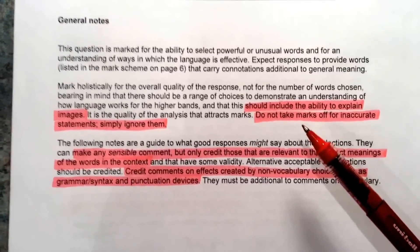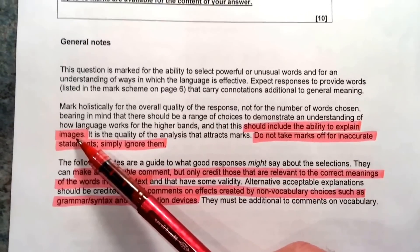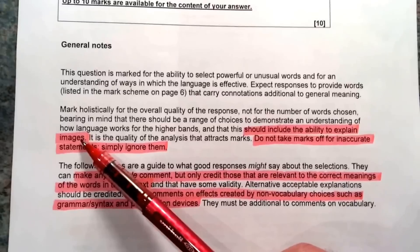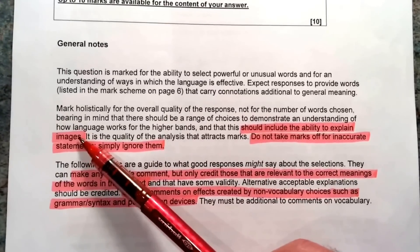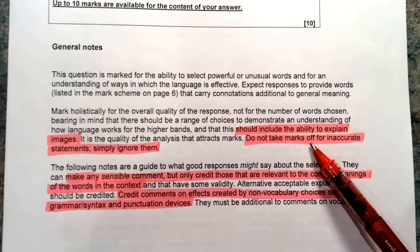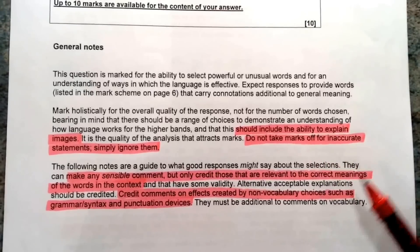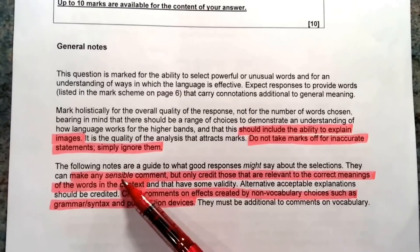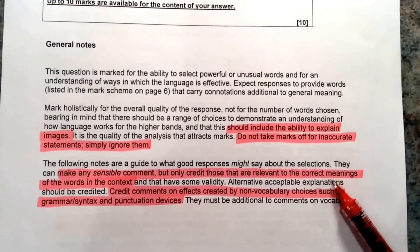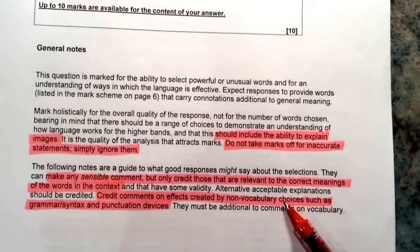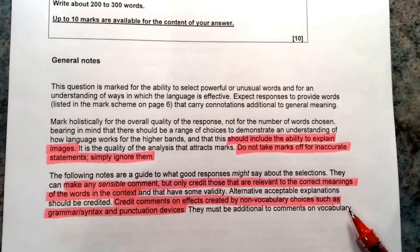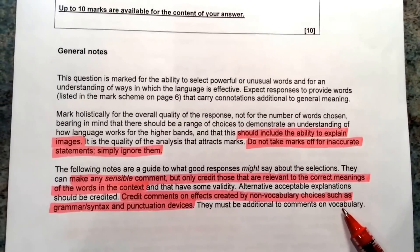The examiners are trying to be really helpful. They want you to be able to talk about images — personification, simile, metaphor, alliteration, or anything to do with sound. But it doesn't matter if you don't name them; as long as you talk about it as imagery, you can still get the marks. There's another helpful point: do not take marks off for inaccurate statements — simply ignore them. So you can afford to make mistakes on this question and you won't lose marks. The examiner will give you marks for any sensible comment. You can even talk about non-vocabulary choices, for example punctuation or types of sentence, and you'll still get marks, as long as you also have comments about vocabulary. That said, I'd stick to the vocabulary choices if you can.